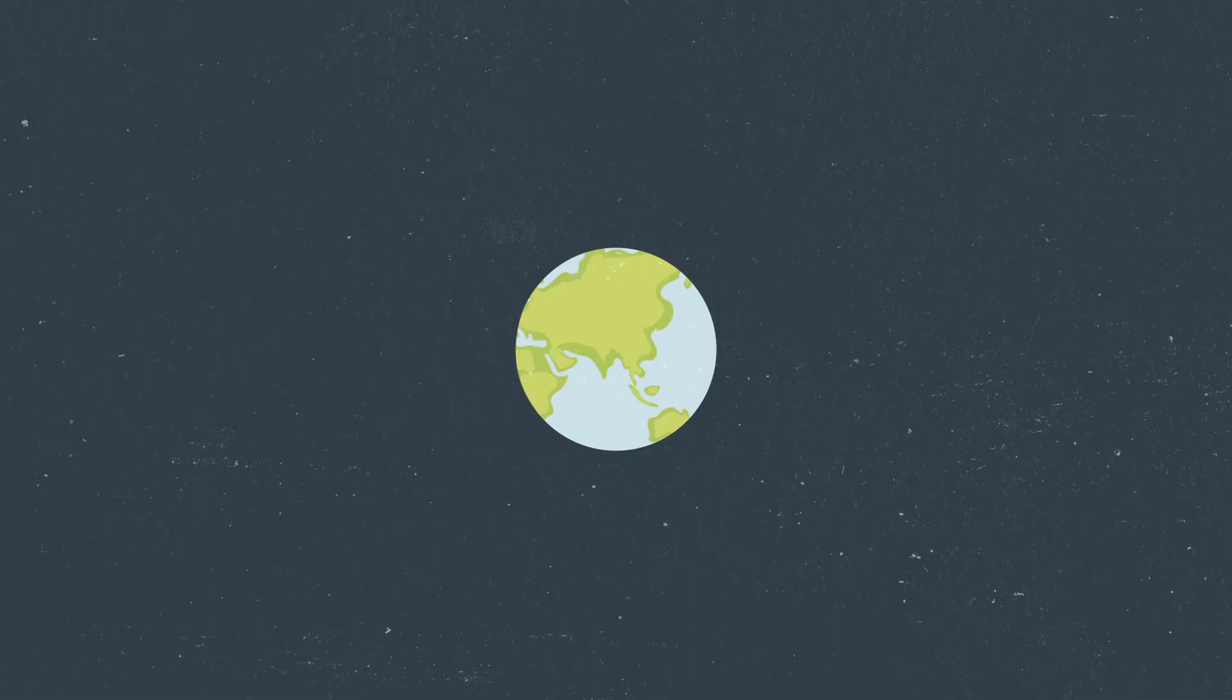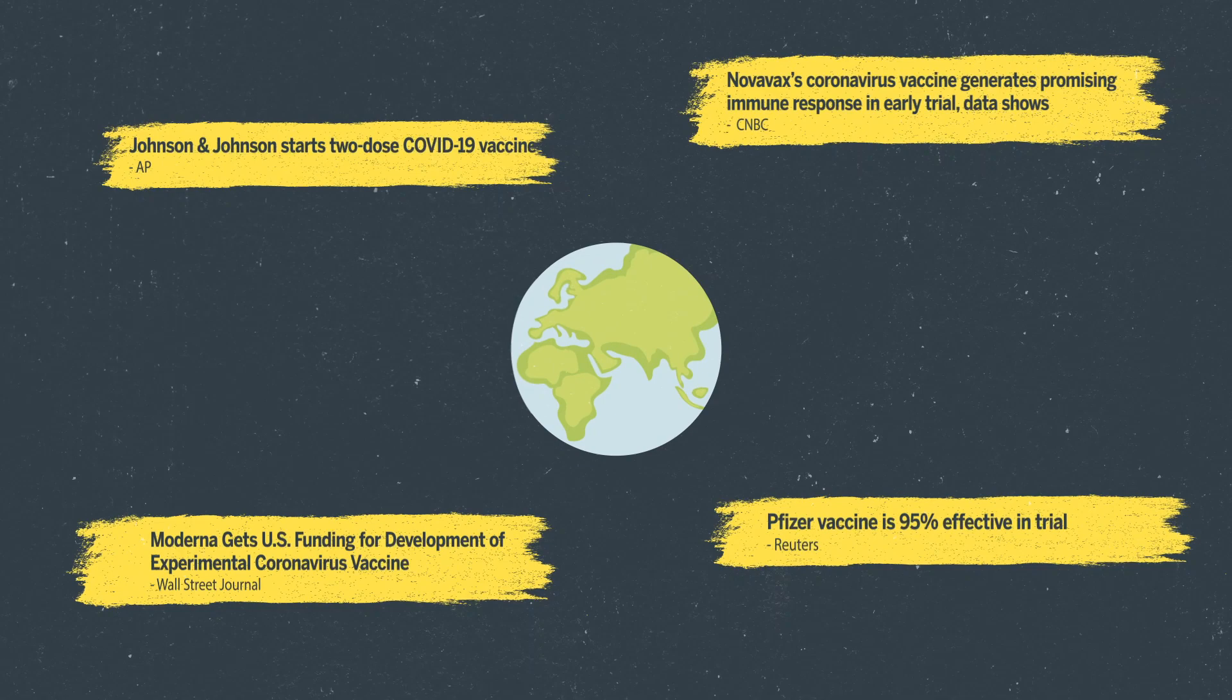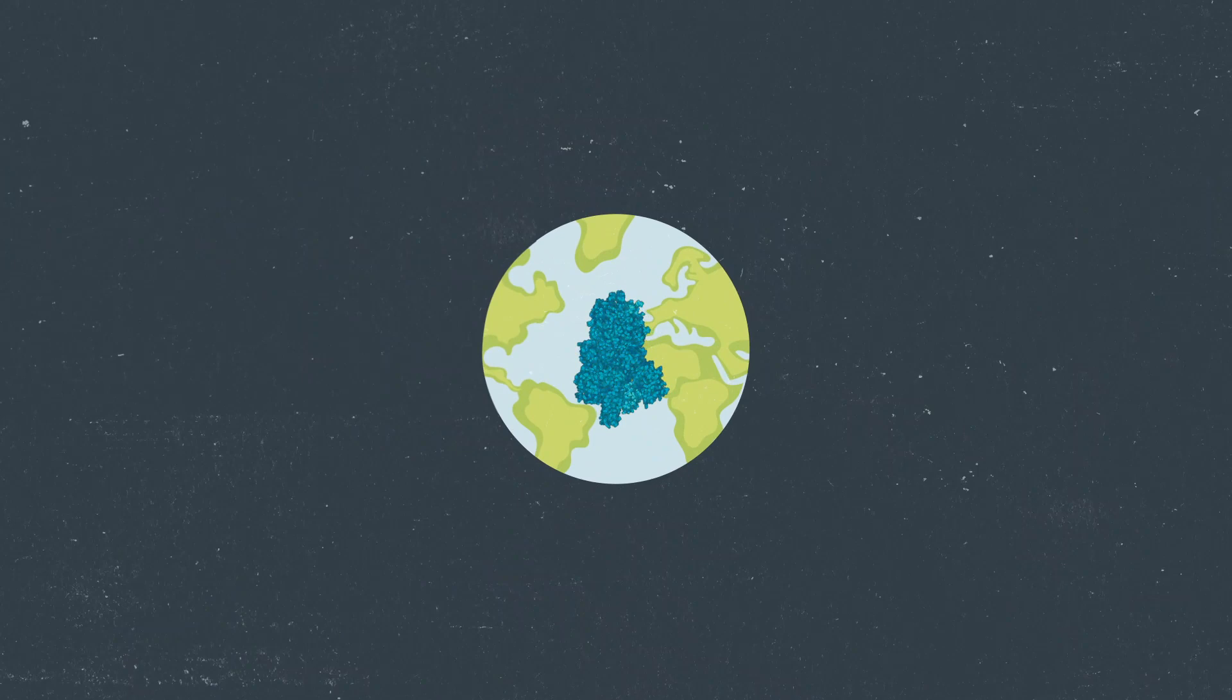McClellan and colleagues published their results in Science in February 2020. When vaccine makers around the world needed a coronavirus antigen, they chose this tweaked spike protein from the NIH and Texas team for the strong immune response it produces.